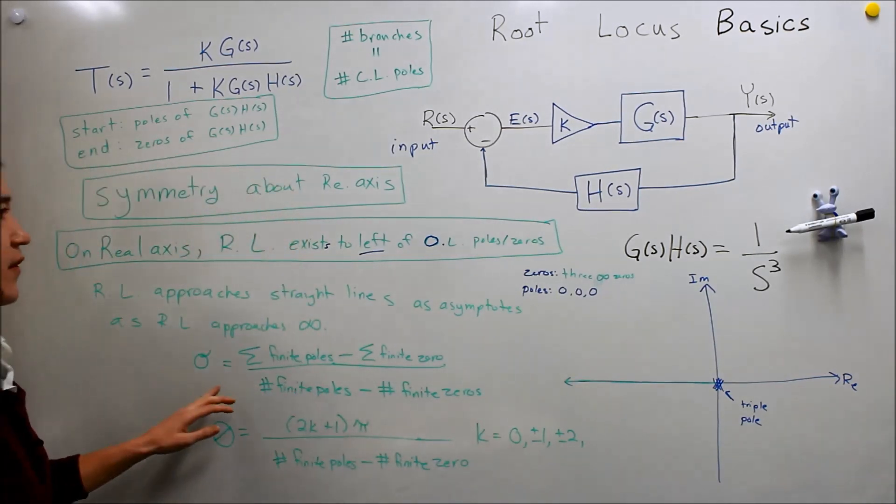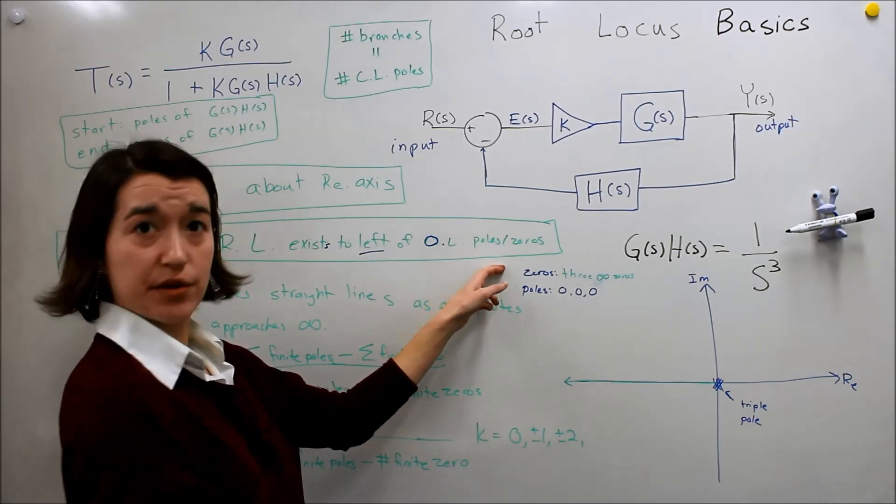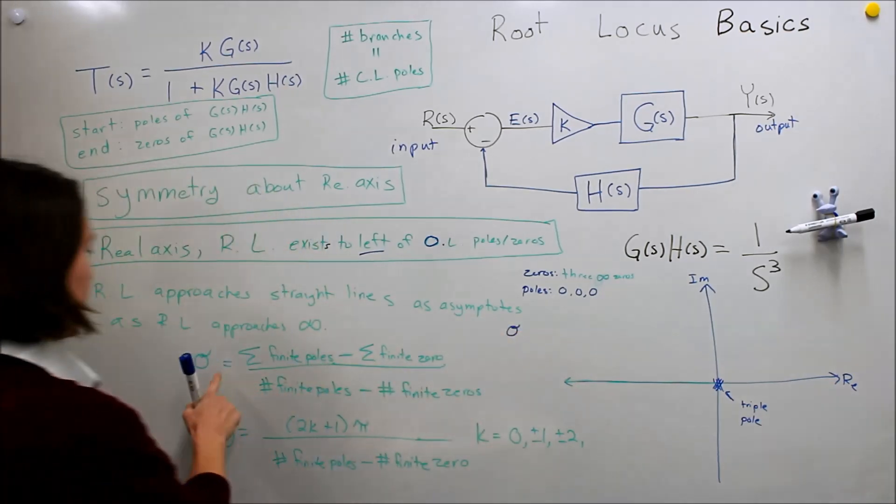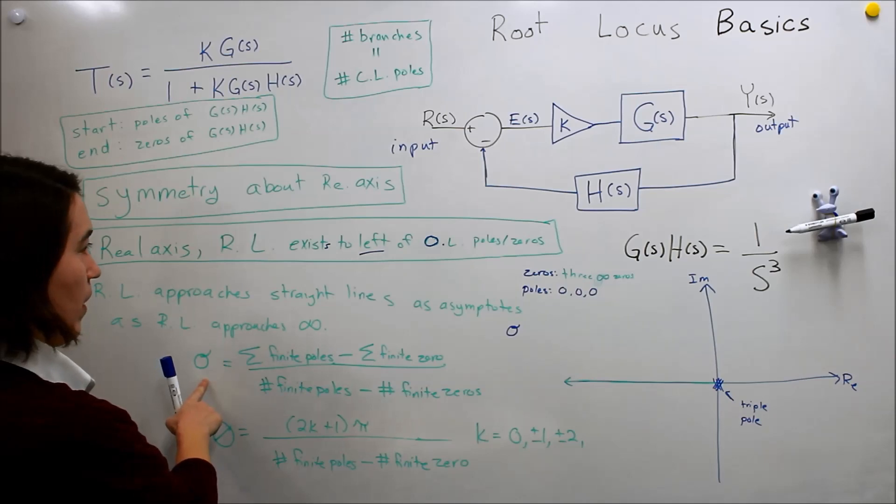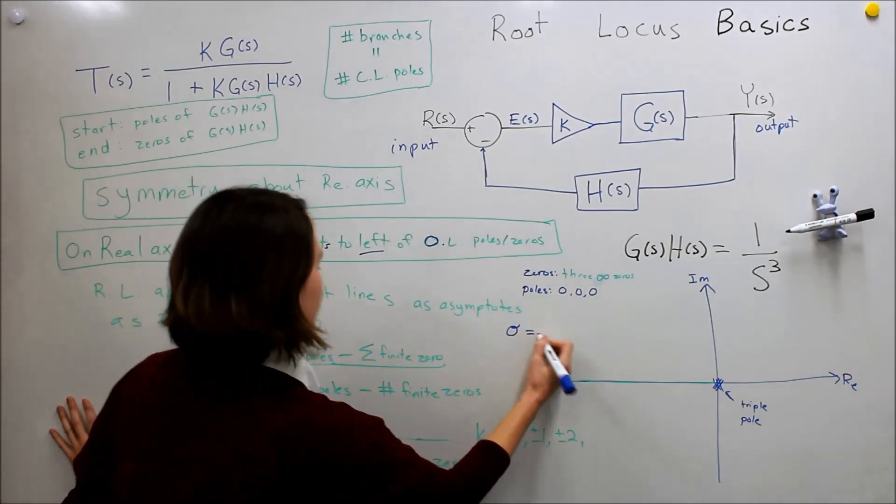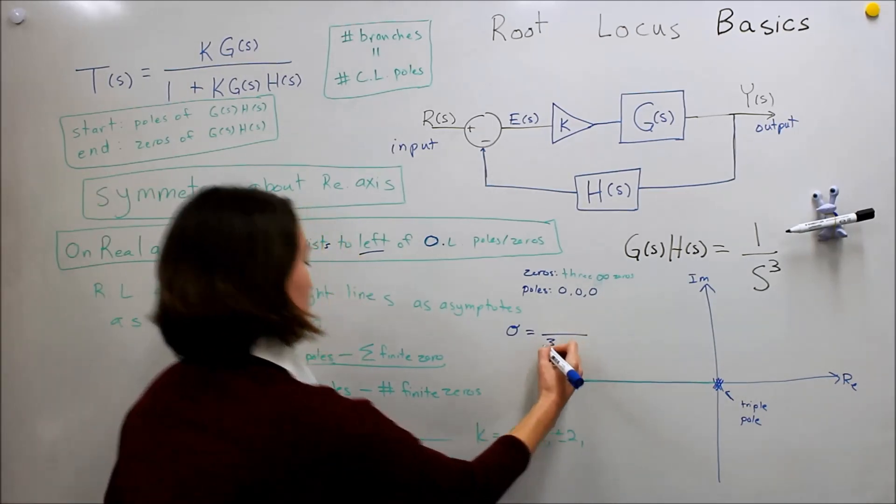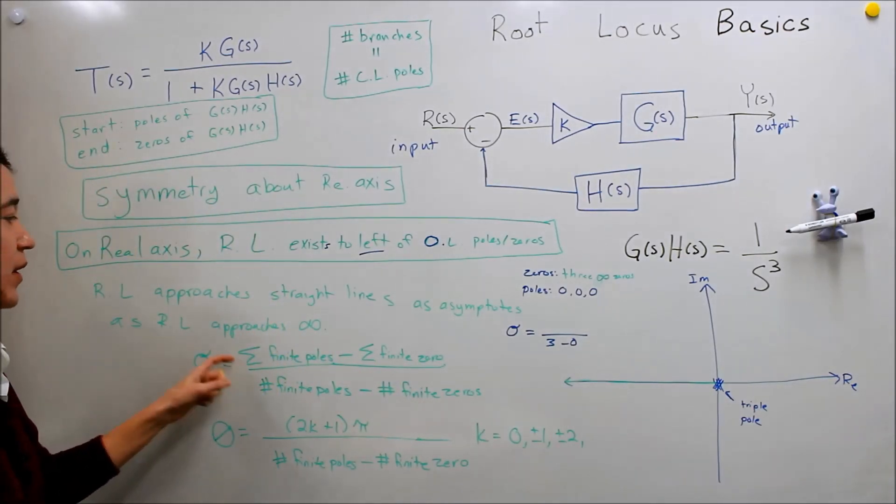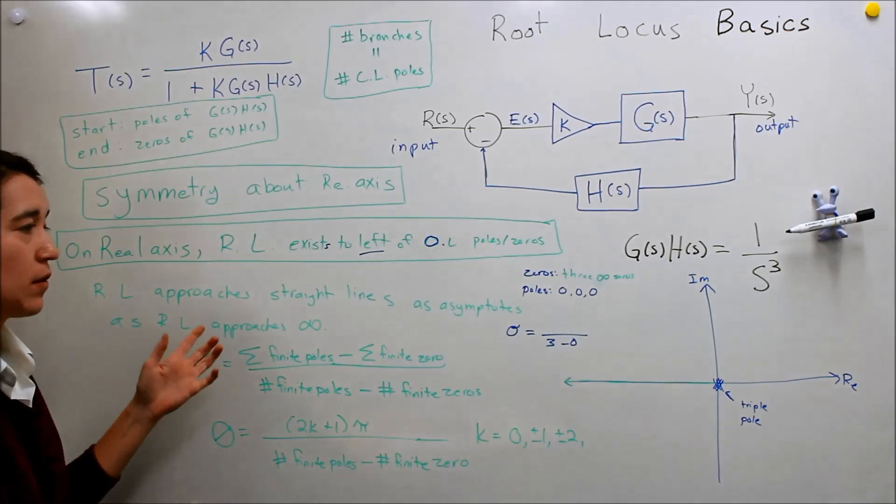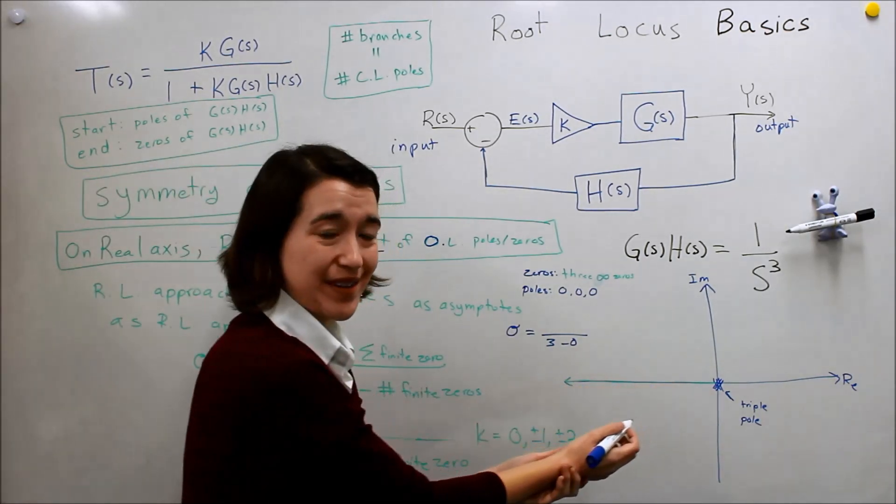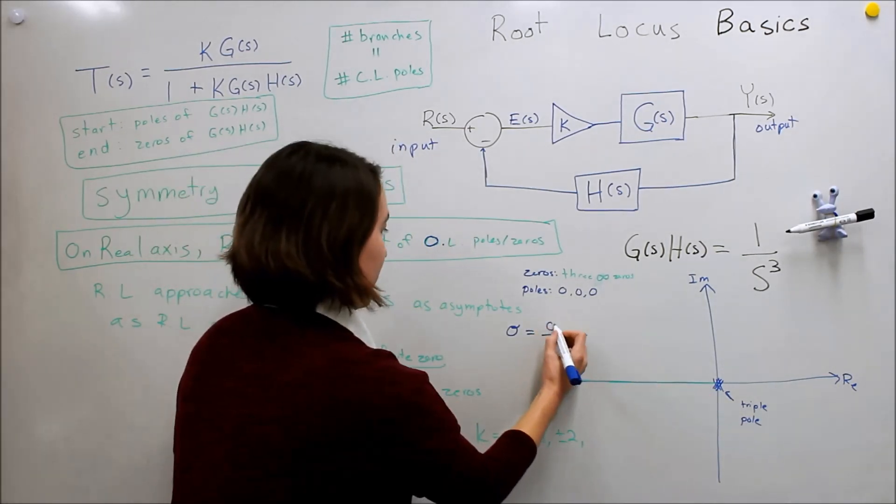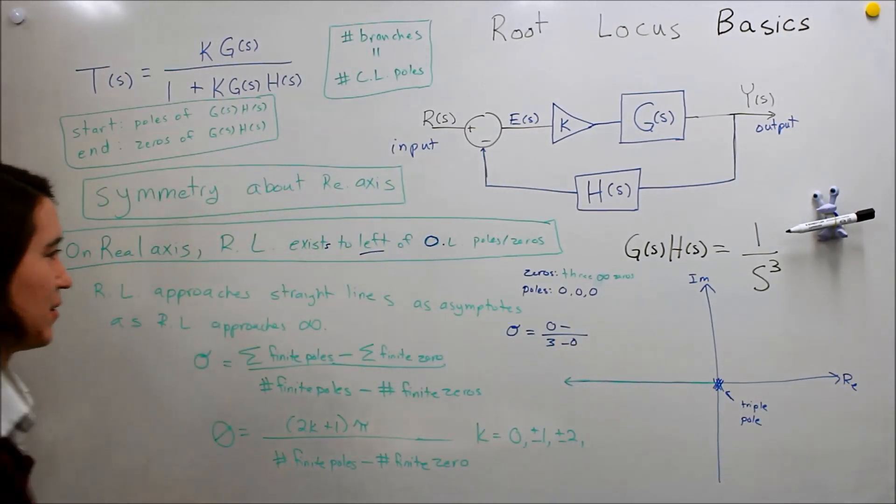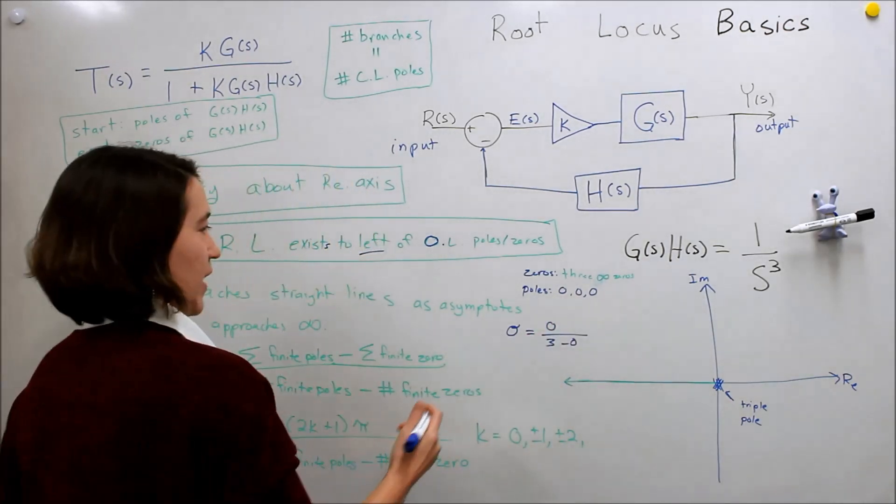First of all, here we have three finite poles and zero finite zeros. So the expression at the bottom here, we're going to calculate this first, our sigma here. So the number of finite poles is three, the number of finite zeros is zero. So we just get a three in the denominator. Now we want to sum up the finite poles. Each of the poles is at zero. This one's easy. Zero plus zero plus zero is zero. And then we minus the finite zeros. They don't exist, so we don't even have to do that part. So we get simply zero.